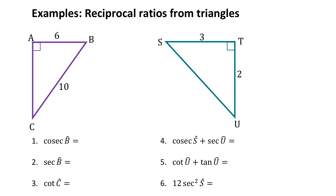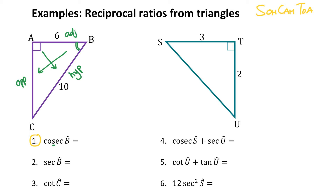Let's look at some examples involving right-angled triangles. Since I'm using trig, let's write down SOH CAH TOA. Question one says cosec of B, so I'm dealing with this angle here. Let me label the sides: opposite the right angle is the hypotenuse, next to B is the adjacent, and opposite the angle is opposite. Cosec is the reciprocal ratio of sine, so that will be 1 out of sine of B. Sine of B is opposite over hypotenuse, so I'm looking for hypotenuse over opposite. My hypotenuse is 10, but I don't know the opposite — I'm going to have to use Pythagoras.